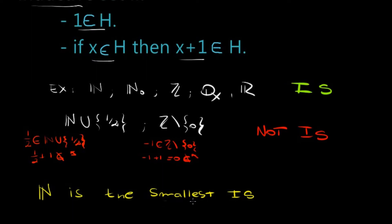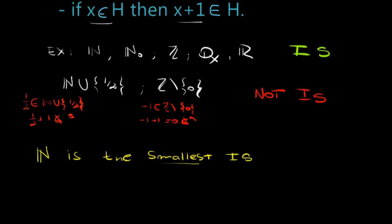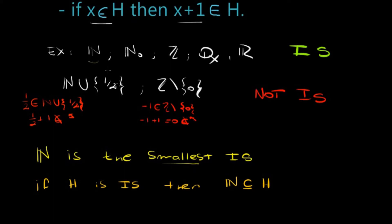In what way do I mean smallest? It means that if h is an inductive set, then the natural numbers are included in h. You can check: the naturals are included in the naturals with 0, in the integers, the rationals, and the reals — so you can actually believe me when I tell you this.